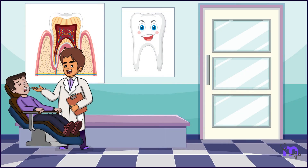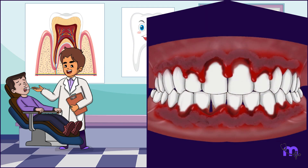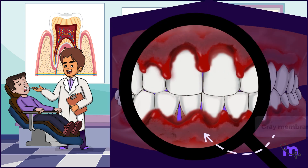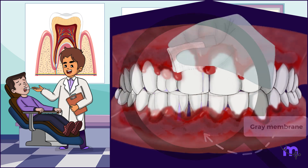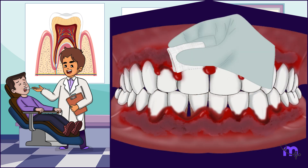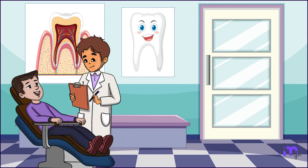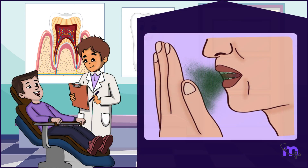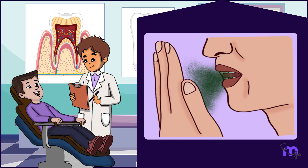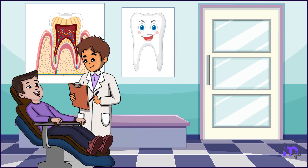I moved on to examine his oral cavity. I noticed that the gums appeared as if someone had punched them out with their fists. A grey membrane covering the gums was also noted. The membrane peeled off easily, leaving raw areas that started bleeding. I also noticed the presence of halitosis.